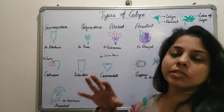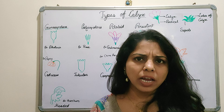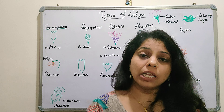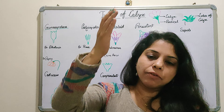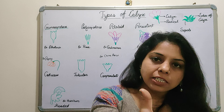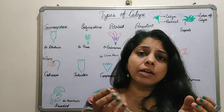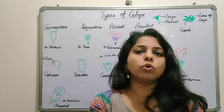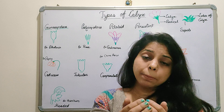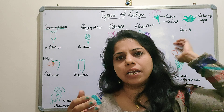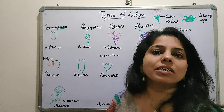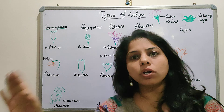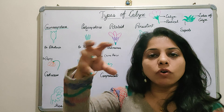Next is Persistent calyx. As the name suggests, it remains — it persists. The calyx remains even after the flower converts into a fruit. So from the time of flowering all the way until the fruit forms, the calyx stays attached and does not fall off.